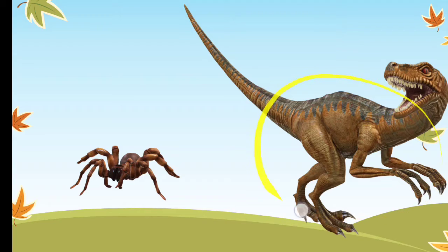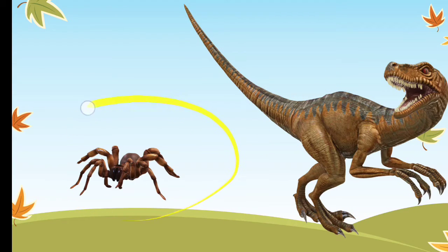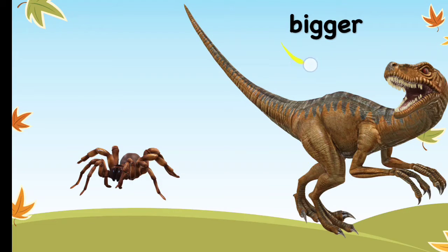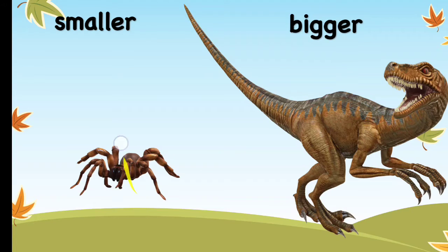A dinosaur is bigger than a spider. So a spider is smaller and a dinosaur is bigger. B-I-G-G-E-R. Bigger. And the spider is smaller than the dinosaur. S-M-A-L-L-E-R. Smaller.